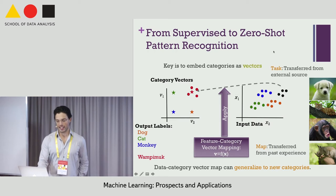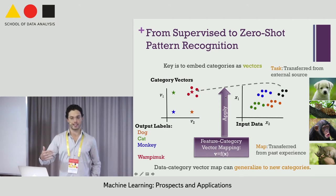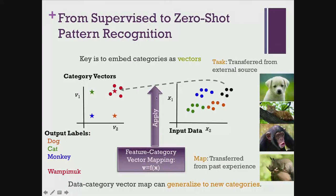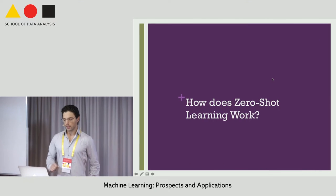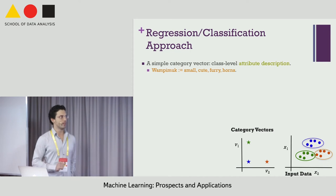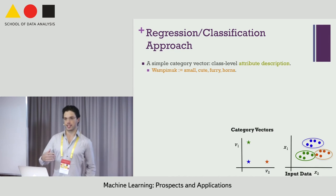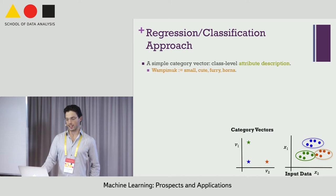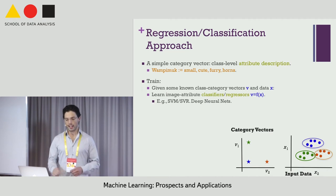There are two things being transferred here. One is the map we've learned from past experience with dogs, monkeys, etc. — that mapping is transferred and applied to new categories. The second is the category vector for the novel category we want to recognize, transferred from an external source. Now I'll explain two simple algorithms for this that you could program yourself.